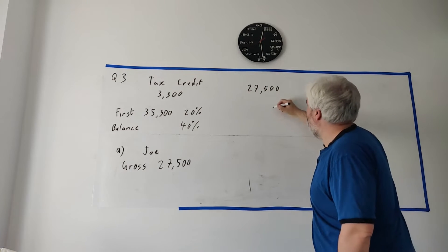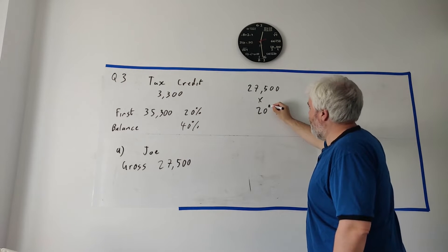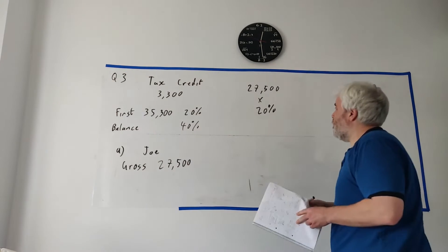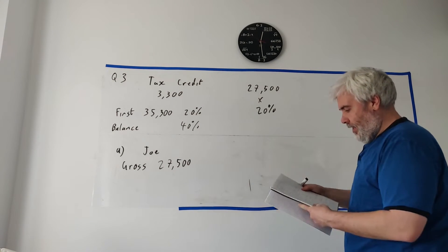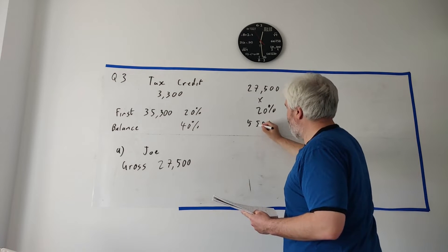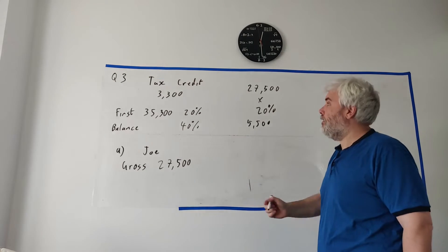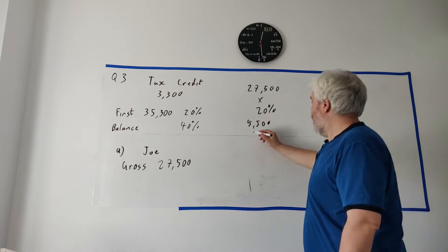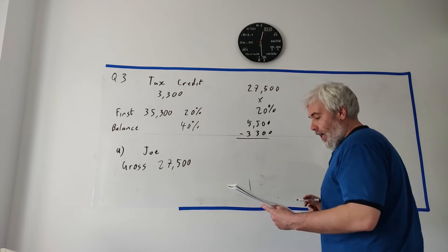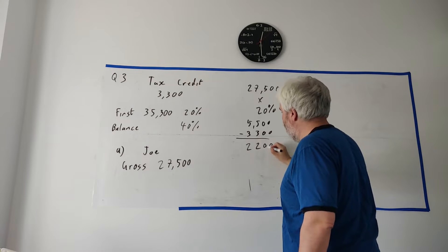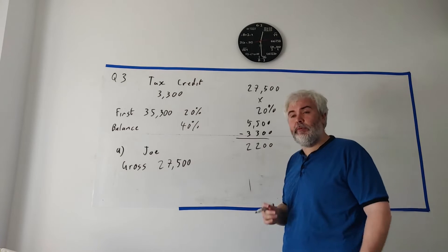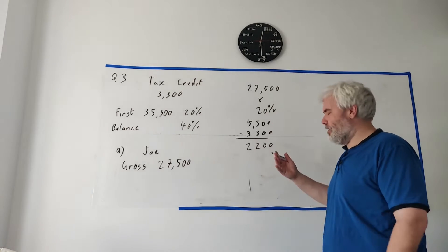This is gross before tax. Let's work out after tax. Let's work out how much tax he pays. So he earned 27,500 and we're just going to multiply that by 20%. Do this in your calculator. We get 5,500. That's how much tax he owes. But wait, he has tax credits. So we take 3,300 away from that and we get 2,200. That's how much tax he pays. Don't leave this as your answer. They didn't ask you how much tax he pays.